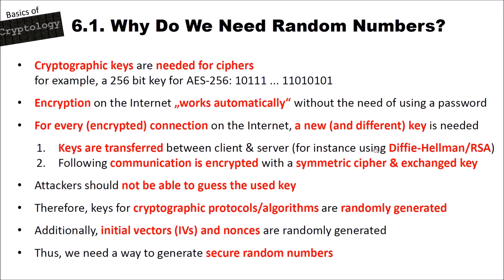For every encrypted connection on the internet, a new and different cryptographic key is needed. When you establish a connection to a server, keys are transferred between the client and the server using Diffie-Hellman or RSA, and the following communication is encrypted with a symmetric cipher. An attacker should not be able to guess the automatically generated key, so keys for cryptographic protocols are randomly generated. Additionally, initialization vectors and nonces used for encryption are also randomly generated.